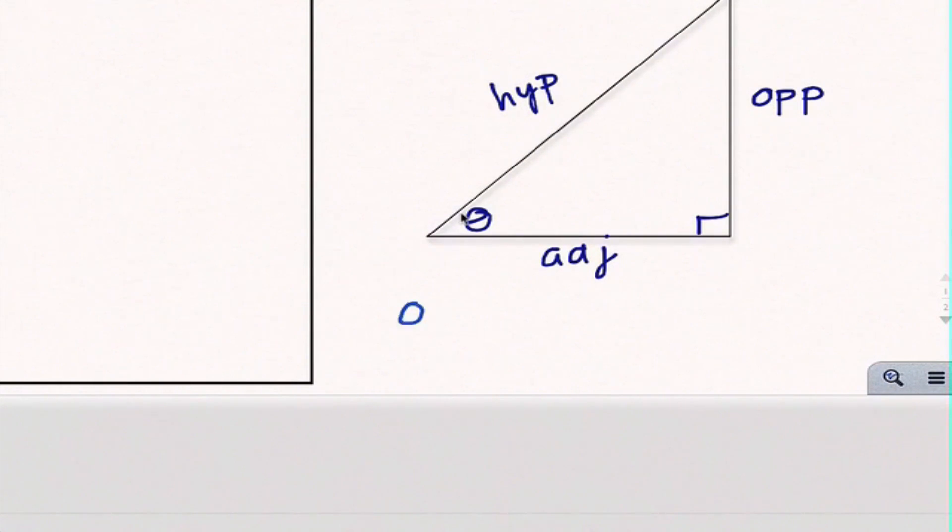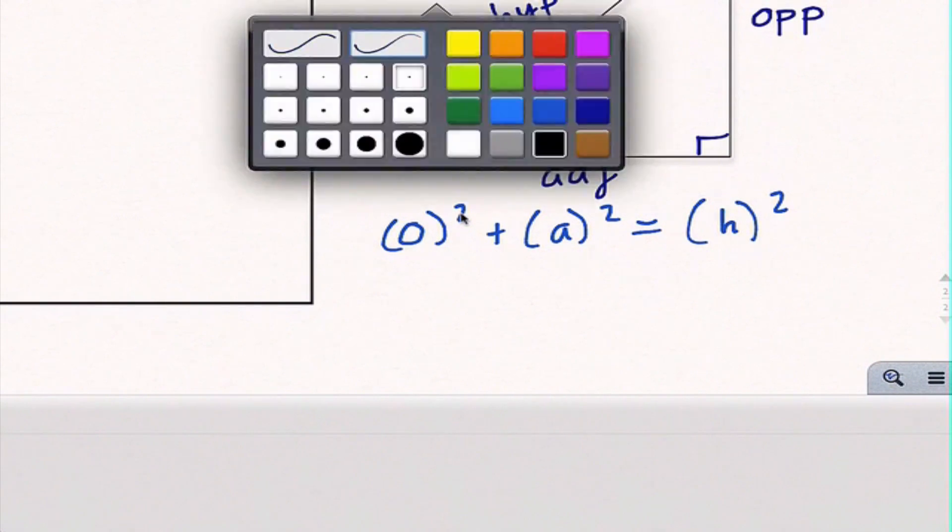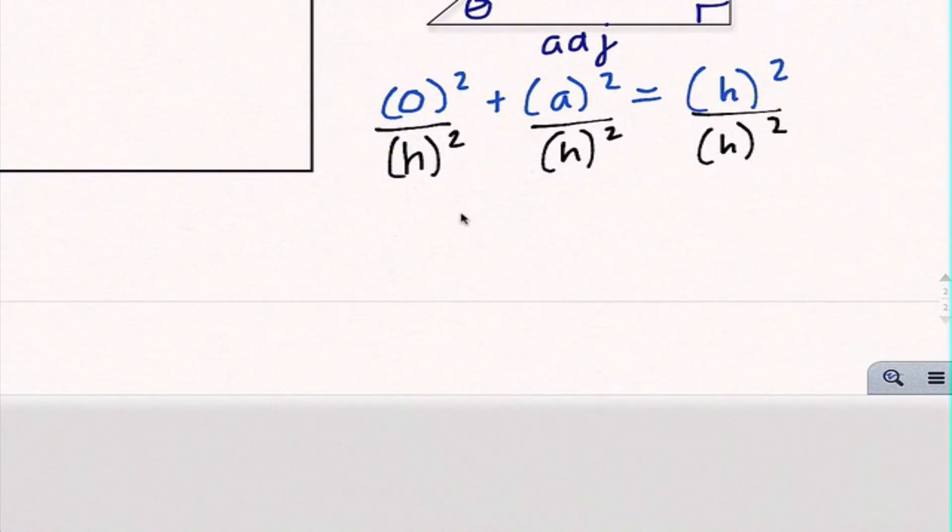And I know that everybody's favorite formula that deals with a right triangle is the Pythagorean theorem. So we actually can use the Pythagorean theorem here and instead of O opposite I'm going to write O and so forth. So I can write O squared plus A squared equals H squared. So regardless of what these values are, we know since it's a right triangle this should be true. What I'm going to do next is divide everything by H squared.